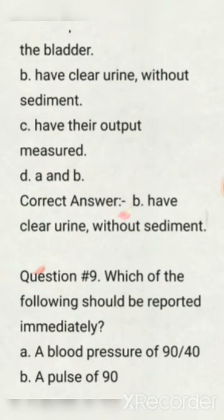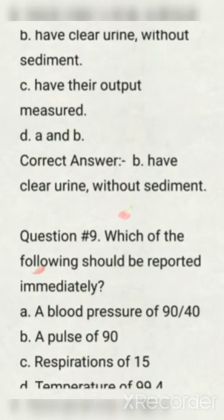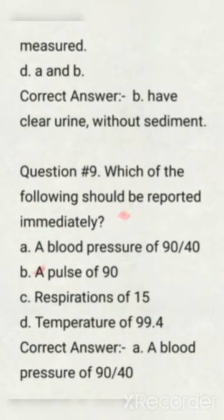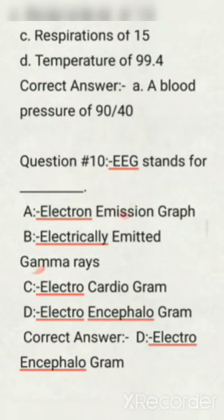Next question: which of the following should be reported immediately? Options are: a blood pressure of 90/40, a pulse of 90, respiration of 15, temperature of 99.4. Correct answer: a blood pressure of 90/40.